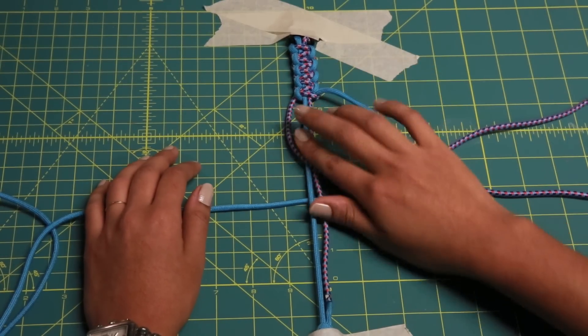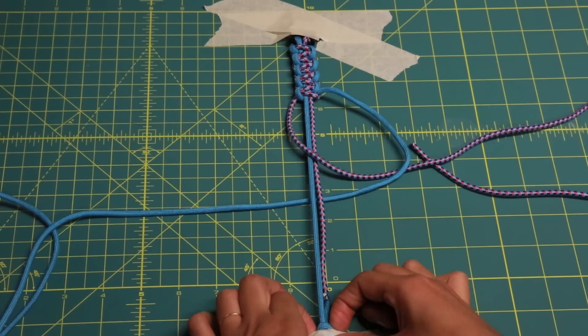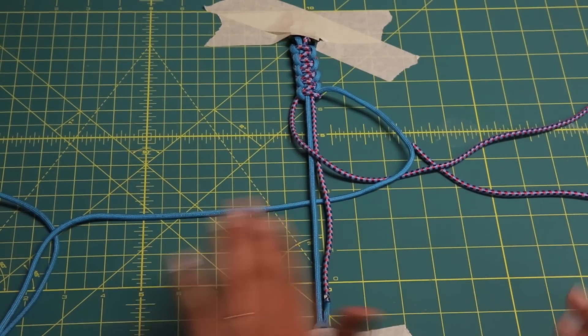And so you just repeat this all the way down and when you get to the end you just tie it. And then you're done. And that's how you braid the dog collar.